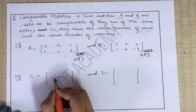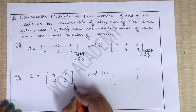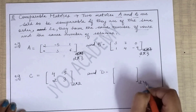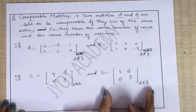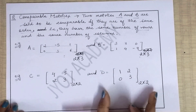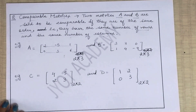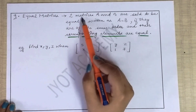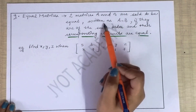Another example: [4, 5; 2, 3] — iska order hai 2×2. Agar is matrix ka order bhi 2×2 ho jata hai, toh un dono ke order same hain — rows and columns same hain — toh aap in dono matrices ko compare kar sakti ho.